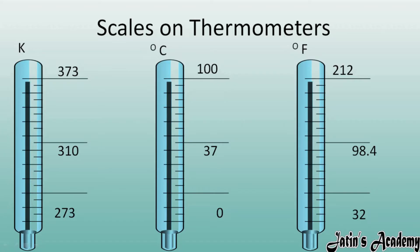Next we are looking at scales on thermometers. We have discussed three thermometers: degree Celsius, degree Fahrenheit, and Kelvin. They all have fixed upper and lower fixed points. In the Kelvin scale, the lower fixed point is 273 and the upper fixed point is 373. In degree Celsius, 0° is the lower fixed point and 100° is the upper fixed point. In degree Fahrenheit, 32° is the lower fixed point.